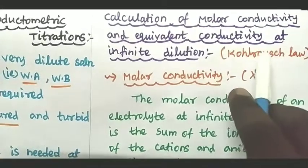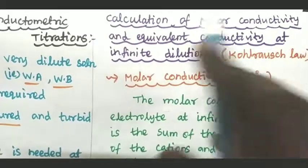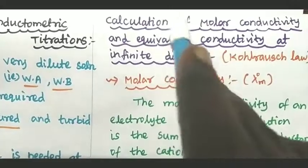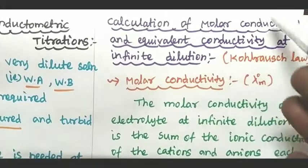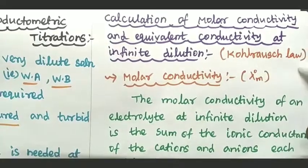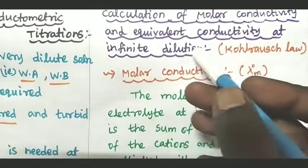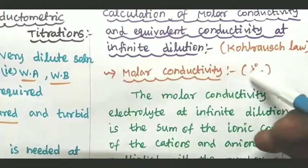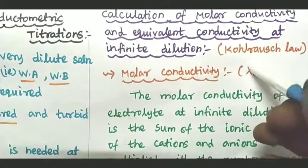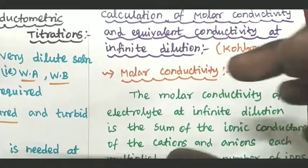What is the Kohlrausch law? The Kohlrausch law is written in terms of molar conductivity. If we use the molar conductivity at infinite dilution, the symbol is lambda-M. Lambda is conductivity and M stands for molar. So lambda-M is molar conductivity at infinite dilution.